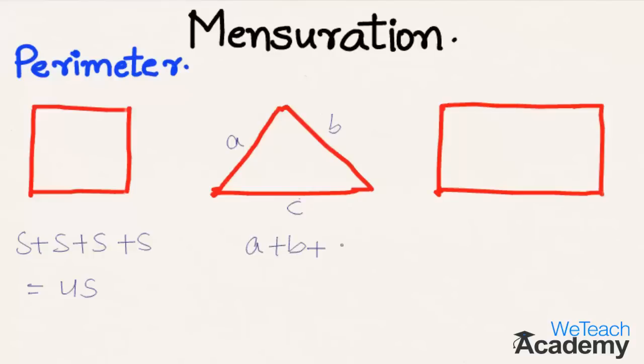And then coming to the rectangle with the sides length and breadth, so perimeter will be equal to two times l plus b. This is nothing but the sum of all the sides, that is l plus b plus l plus b.